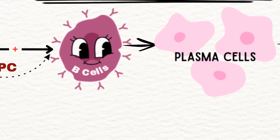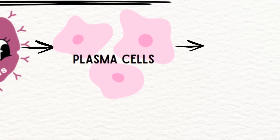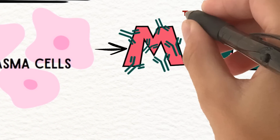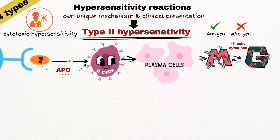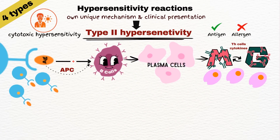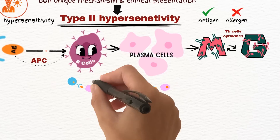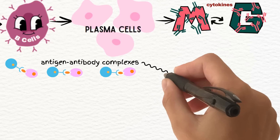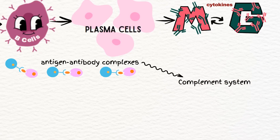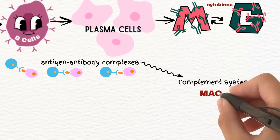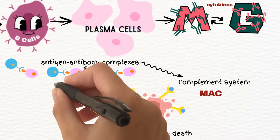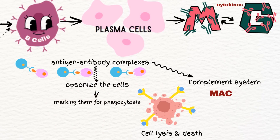Plasma cells produce specific antibodies. Immunoglobulin M is produced first, followed by class switching to immunoglobulin G in response to signals from T-helper cells and cytokines. Immunoglobulin M and immunoglobulin G bind to the antigens on the surface of the targeted cells, forming antigen-antibody complexes. This activates the complement system, leading to the membrane attack complex, which creates pores in the cell membrane, resulting in cell lysis. The antigen-antibody complexes can also opsonize the cells, marking them for phagocytosis by macrophages and neutrophils.